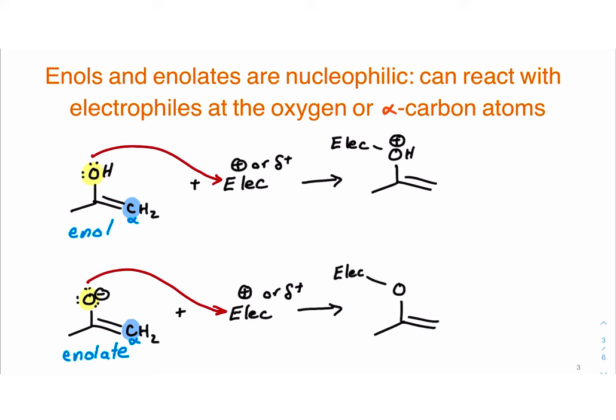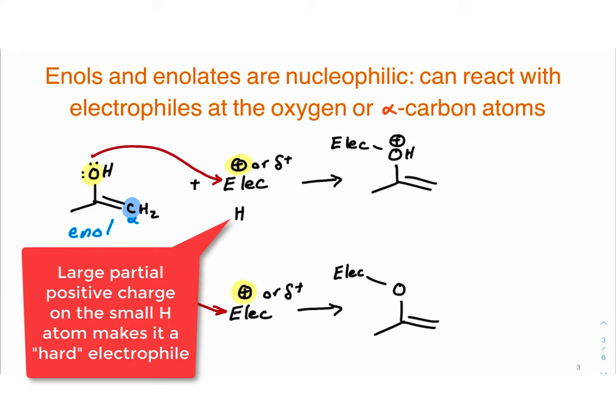Enols and enolates are nucleophilic and they can react with electrophiles at the oxygen or alpha carbon atoms. The typical kinds of electrophiles that will react with the oxygen atom are known as hard electrophiles. They will typically have a very concentrated positive charge and be strongly ionic, including things like proton sources.